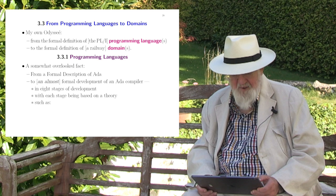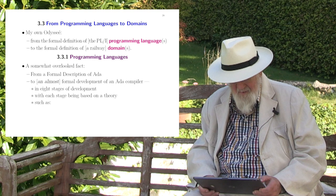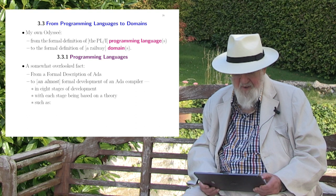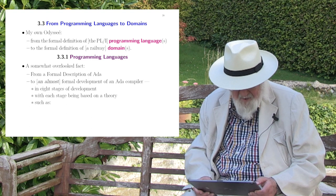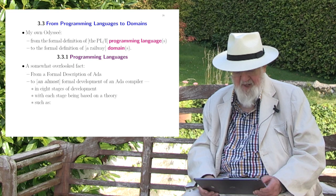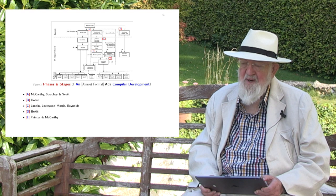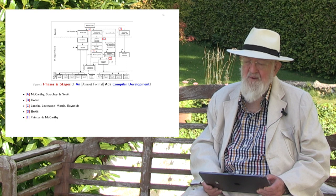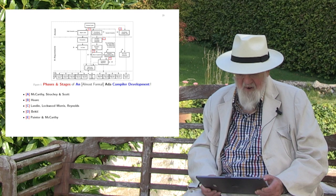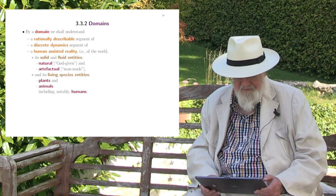The third section is about programming languages — from programming languages to domains. My own travel through my professional life has been from the formal definition of programming languages to the formal definition of domains. A somewhat overlooked fact is that from a formal description of ADA to an almost formal development of an ADA compiler, in eight stages of development, with each stage being based on the theory. You cannot read this diagram, but it just says that there are many steps in developing a compiler. Only the horizontal row at the bottom is the actual coding of the compiler, whereas all the other boxes designate steps of development, each supported by a theory.